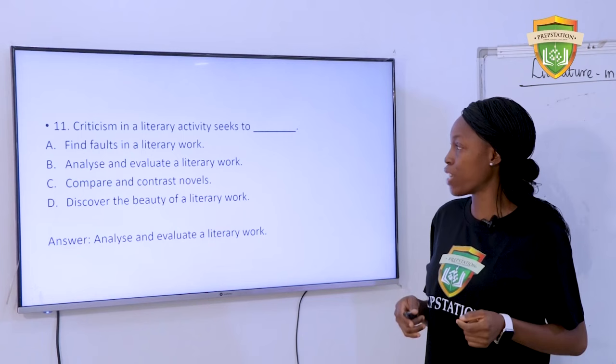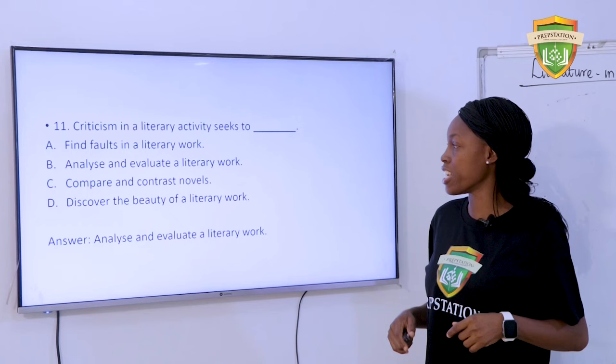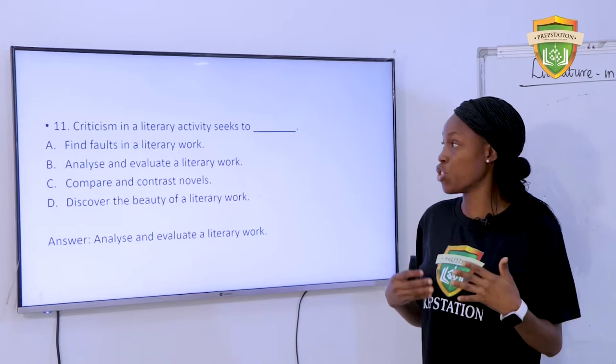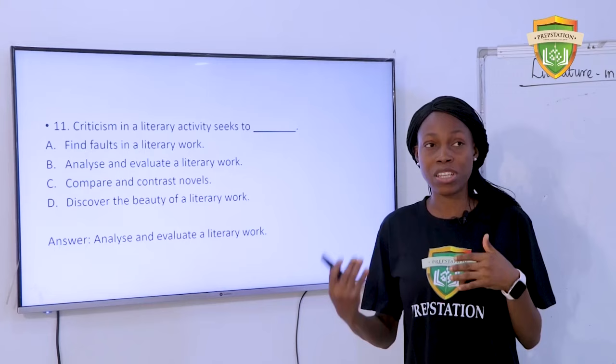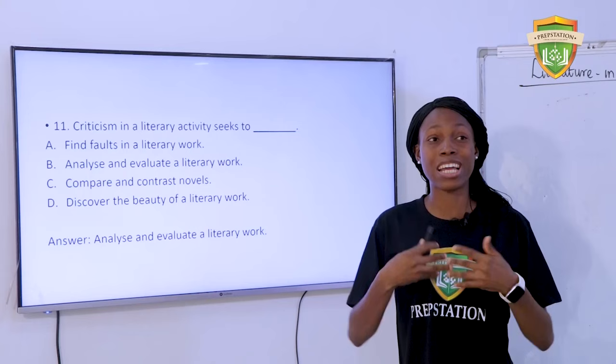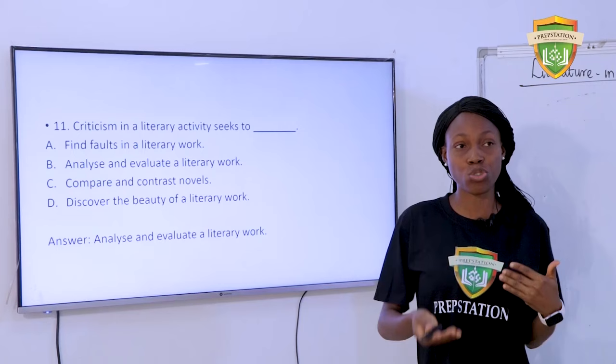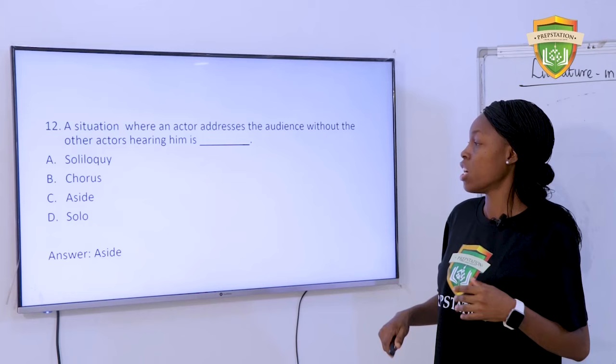Criticism in literary activity refers to — A. Finding faults in the literary work. B. Analyzing and evaluating the literary work. C. Comparing and contrasting novels. D. Discovering the beauty of a literary work. When you make use of the word criticism in literature, what actually goes on is the person analyzing your work and then evaluating it — the good and the bad side. So the answer is B: analyze and evaluate the literary work.